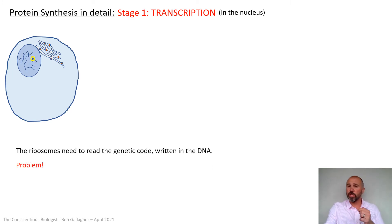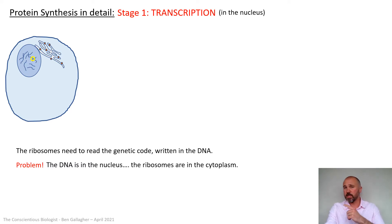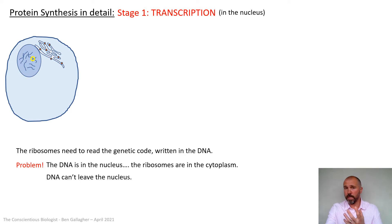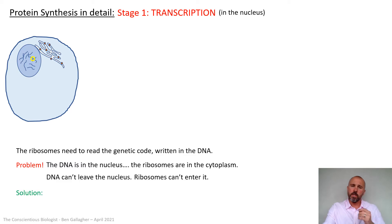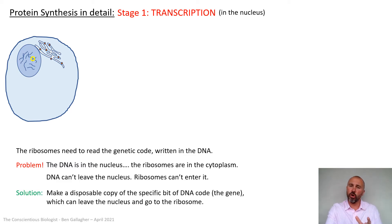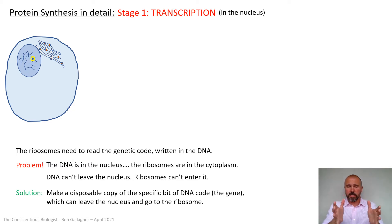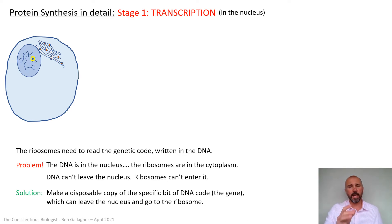There's a problem here: the ribosomes need to read the genetic code written in the DNA, but the DNA is in the nucleus, held within the nuclear envelope, while the ribosomes are in the cytoplasm on the rough endoplasmic reticulum. The DNA can't leave the nucleus — it's too big to escape even through the nuclear pores. And the ribosomes can't get in, as even free ribosomes in the cytoplasm would be too large. So the solution is to make a disposable copy of the specific DNA code you want — that section is called a gene, with one gene coding for one polypeptide. This small copy can leave the nucleus through the nuclear pores and reach a ribosome.